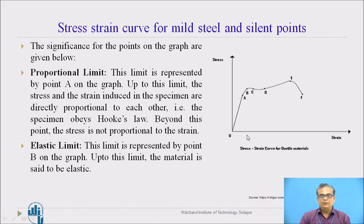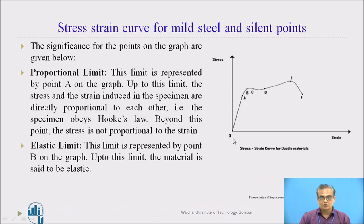The stress-strain curve is a very important curve drawn after every tensile test. For the initial portion, the curve is a straight line, showing that stress is proportional to strain up to a certain limit — say point A — which is known as the proportional limit. Up to the proportional limit, the material obeys Hooke's law. Beyond the proportional limit is point B, the elastic limit. Up to the elastic limit, the material is elastic, meaning if you unload the material at this point, it will regain its original shape and size immediately.